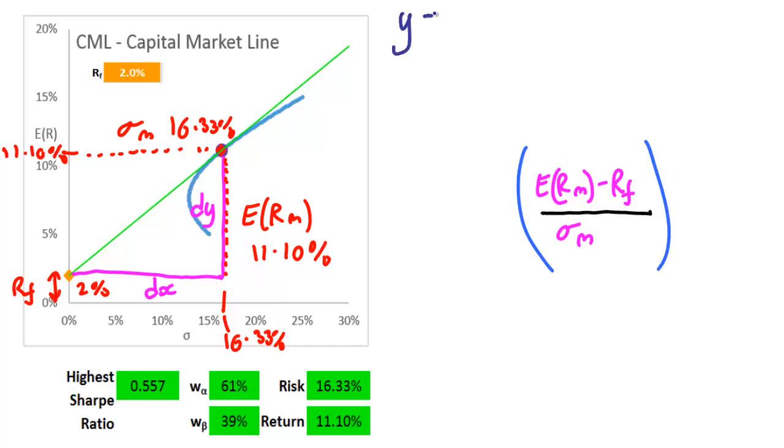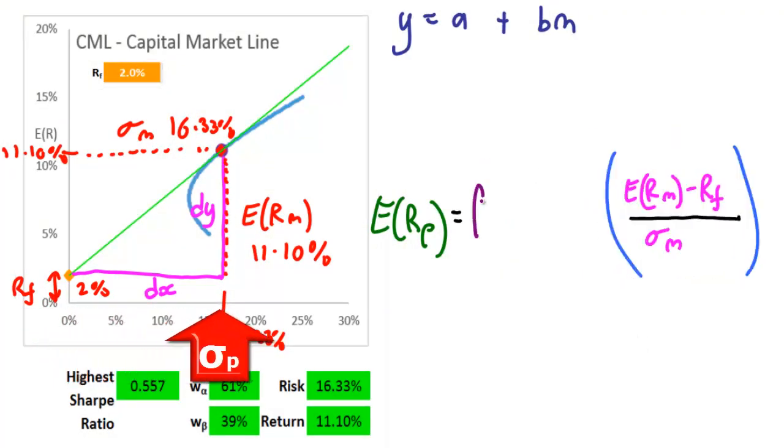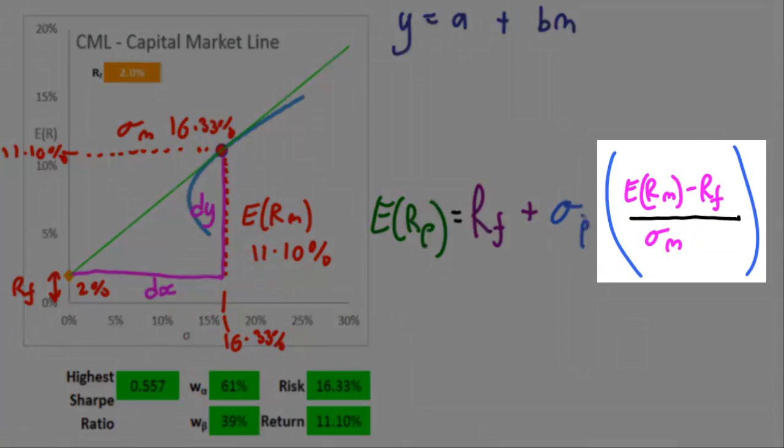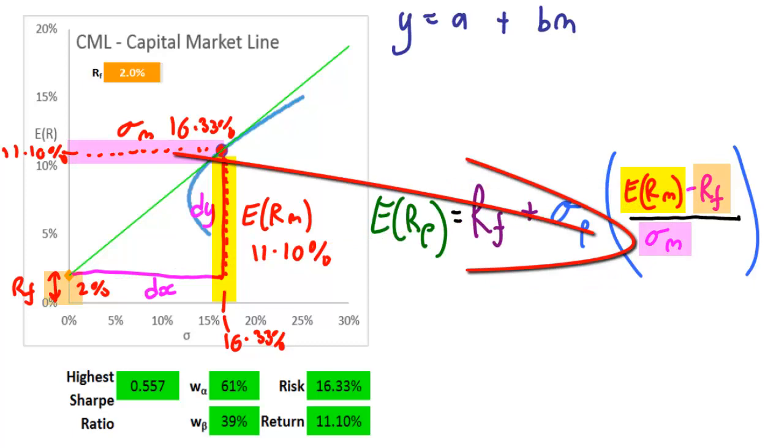So let's derive the full capital market line equation. So that's going to be the expected market return is equal to the risk-free rate plus the product of sigma P multiplied by the slope again which is the expected return of the market take away the risk-free return divided by the market's own sigma.